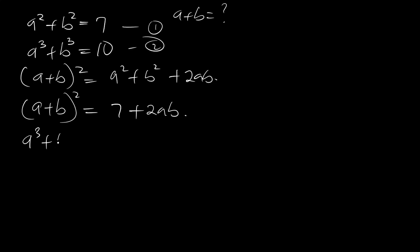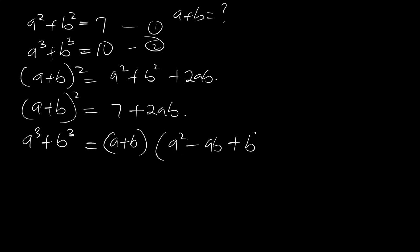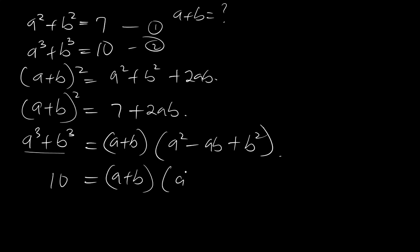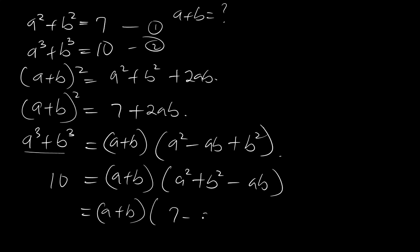a cubed plus b cubed is the same thing as a plus b, times a squared minus ab plus b squared. So we have a plus b times — this is 10. And this is a squared plus b squared minus ab, so we have a plus b times 7 minus ab equals 10.